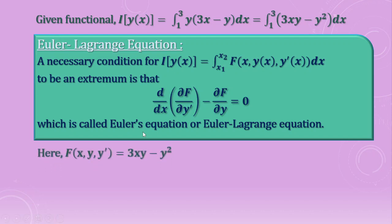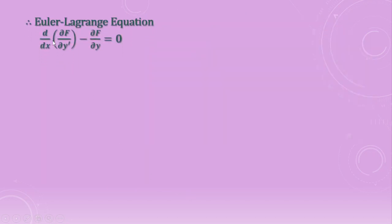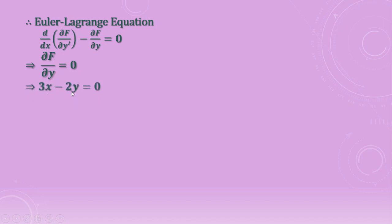The given functional is 3xy minus y squared. We calculate the partial derivatives: ∂f/∂y' equals zero, and ∂f/∂y equals 3x minus 2y, obtained by taking the partial derivative with respect to y. The Euler-Lagrange equation becomes d/dx of ∂f/∂y' minus ∂f/∂y equals zero, which reduces to ∂f/∂y equals zero since the first term is zero.